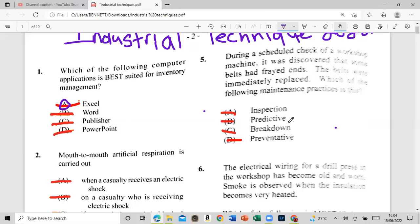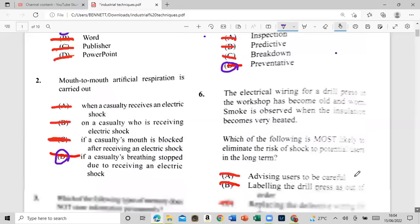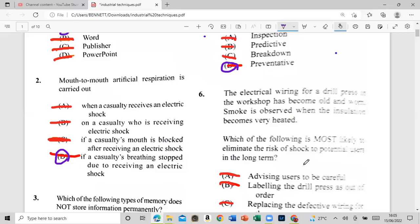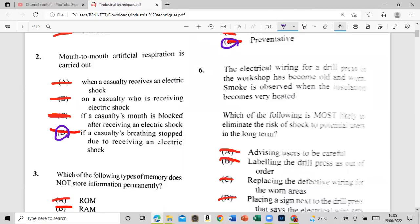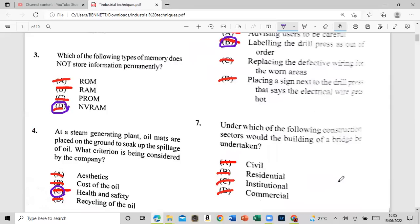And that would be the preventative, they are prevented. All right, let's move on to six: electrical wiring, appropriate pressing direction on the board. And one smoke is observed, the insulator we found very easy. That's which of the following is most likely to be the risk of shock to potential users? That will be living in the jail first. All right, so now where are you going? This is going to be one of the quickest video that I do ever. Under which of the following construction sector would be building a fabric undertaking? And that would be civil.